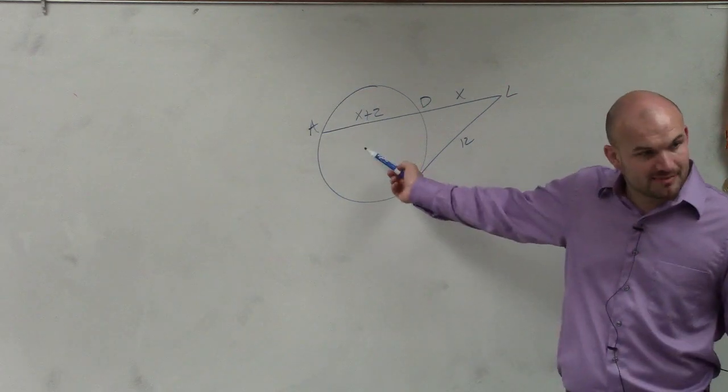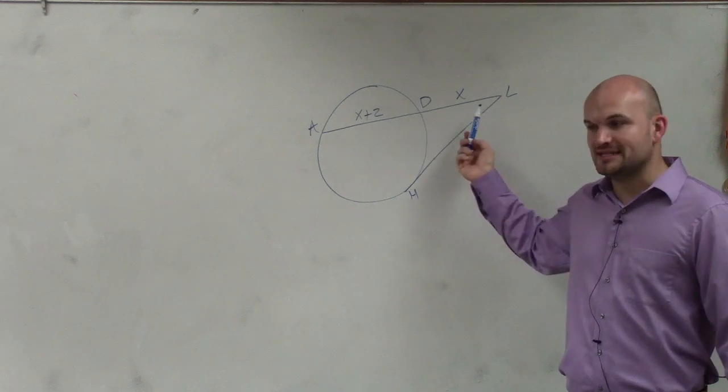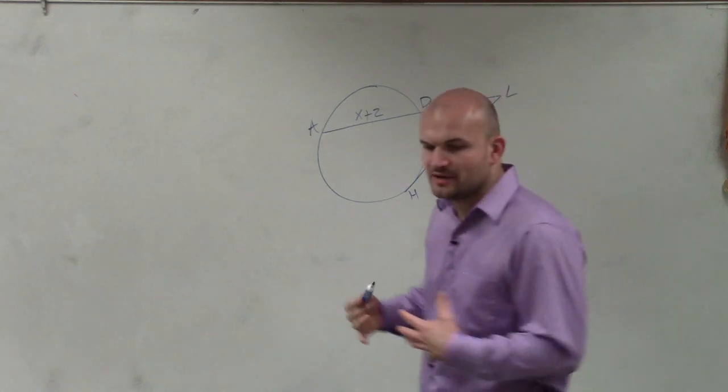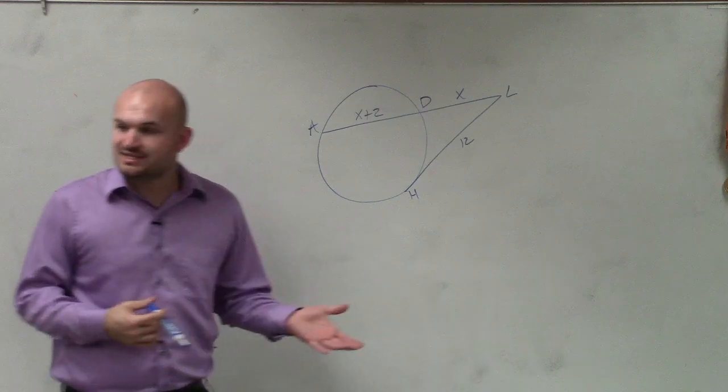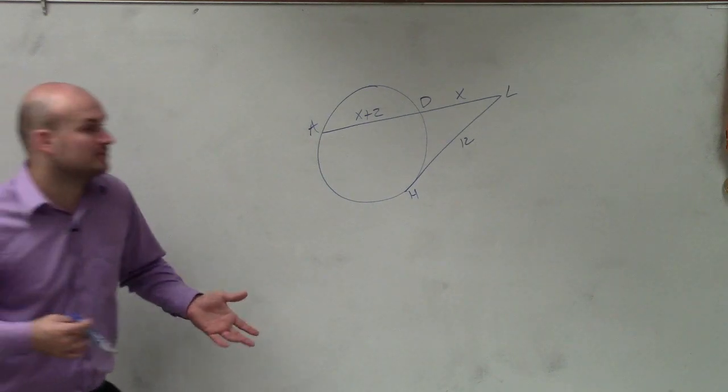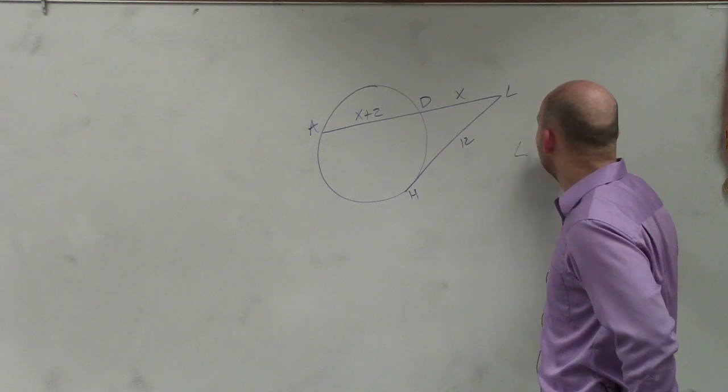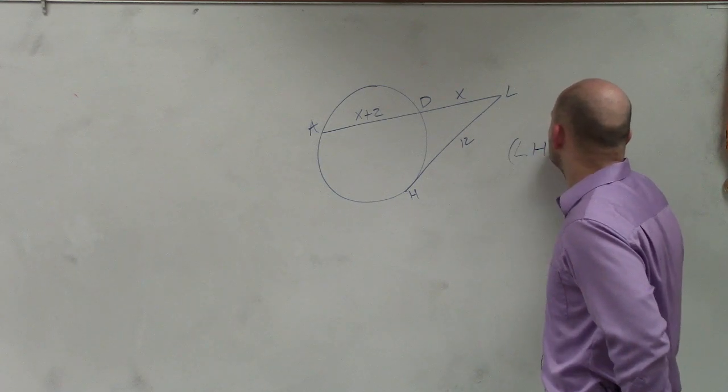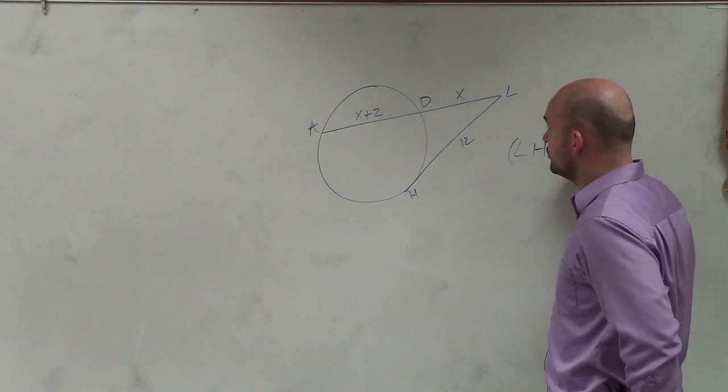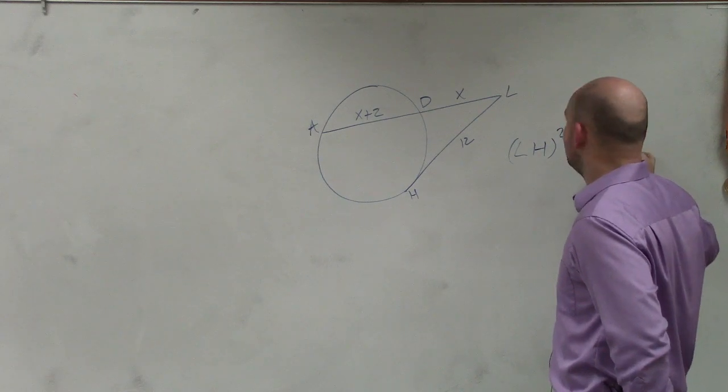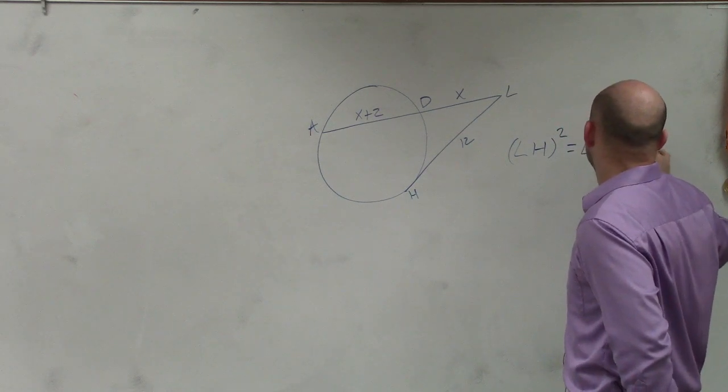We talked about when we have a secant line and a tangent line, which you guys can see. You can see that here is my tangent line, and here is my secant line. So one thing we talked about is there is a relationship between the lengths of a secant and a tangent line. And the relationship went like this.